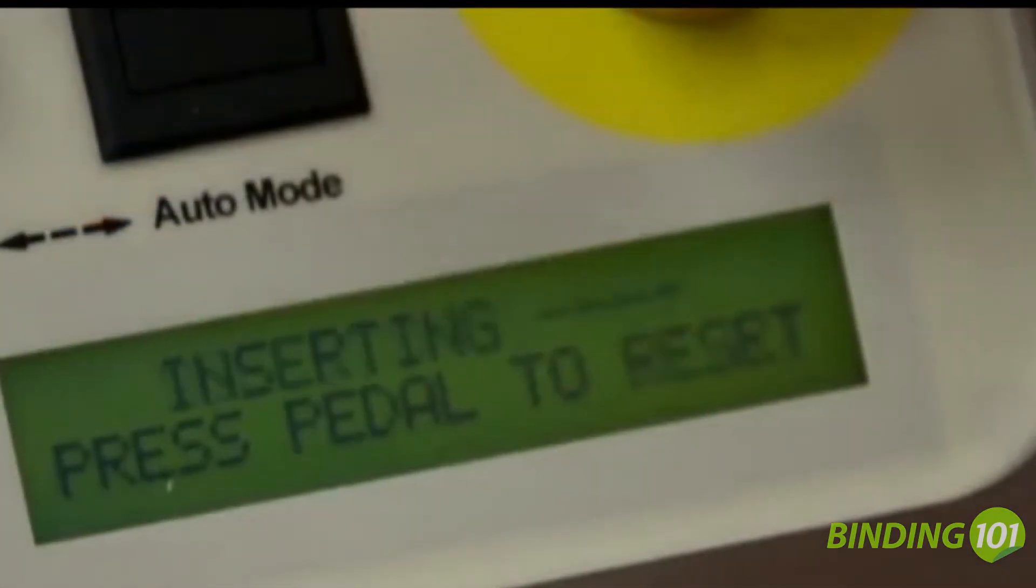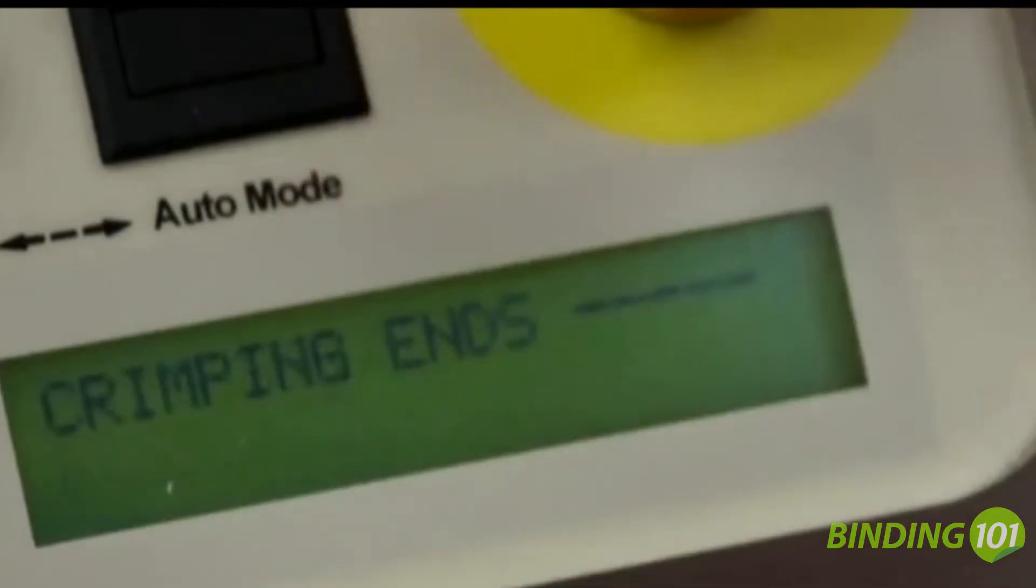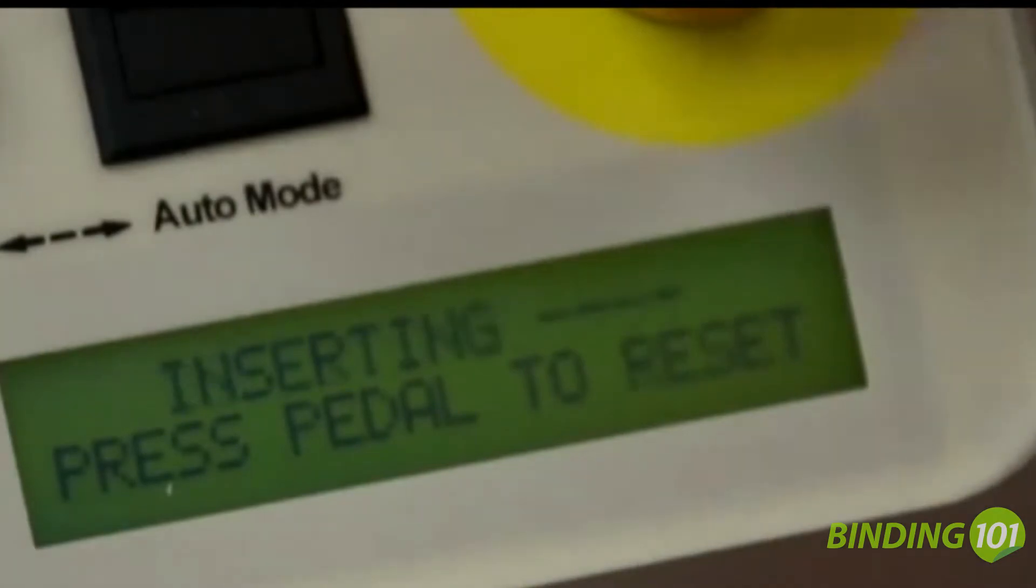The Coilmatic has an LCD screen that guides the operator through the machine's setup and operation. The LCD screen communicates the machine status at all times.